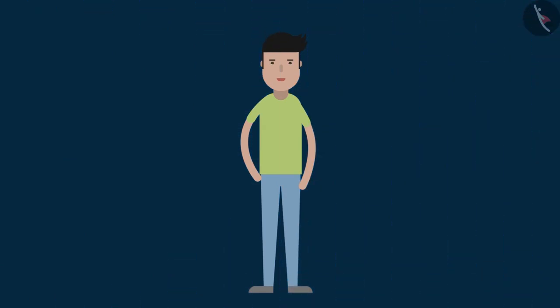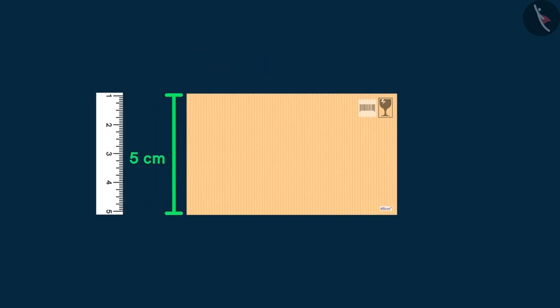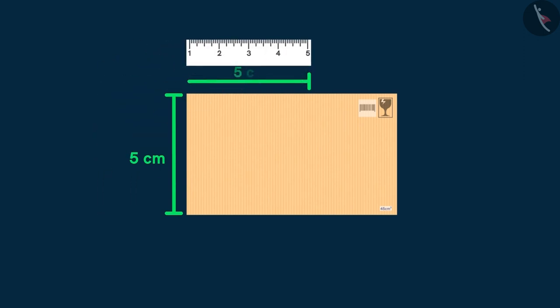Consider this situation: Raghu gets a rectangular shaped parcel from the delivery man. He wants to measure the parcel to guess its contents. He has a five centimeter long scale that he uses to measure the parcel. He finds that the width of the parcel is exactly five centimeters, but the length is somewhat longer than five centimeters.